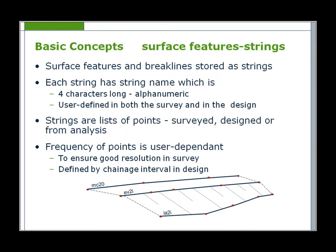Surface features and break lines are stored as strings, with each string having a 4-character alphanumeric string name. String names can be user defined in both the survey and the design, although restrictions can apply. For example, master alignments must always have an initial character of M.